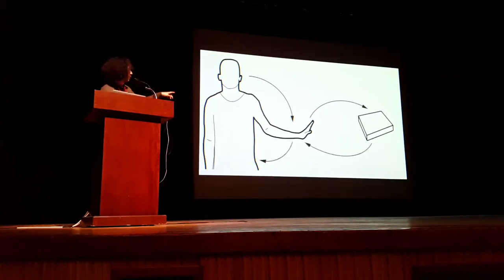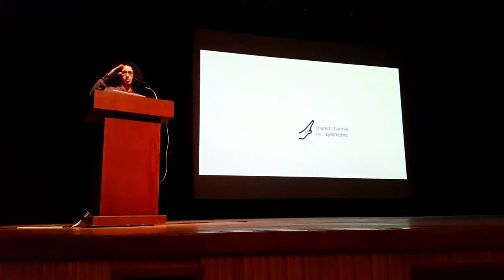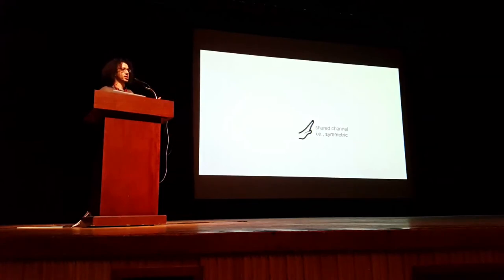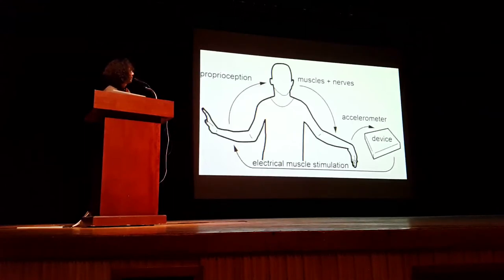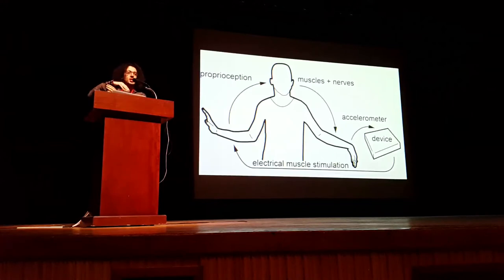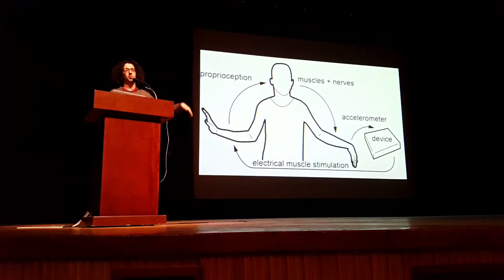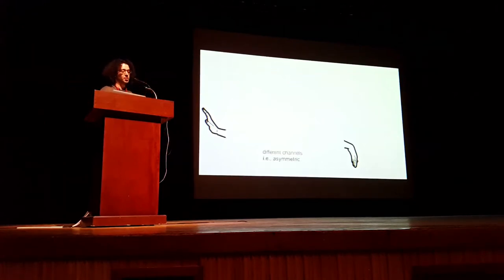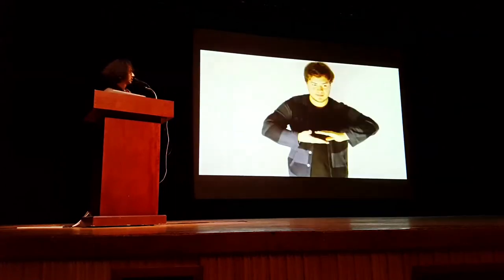What you've seen so far — scrubbing through the video with the slider and wrist tracking simultaneously — we call symmetric proprioceptive interaction, a reference to gesture output. But nothing says we need to be on the same limb. In an asymmetric arrangement, I have an accelerometer on one arm controlling something while the device outputs to another arm — two limbs doing different things.